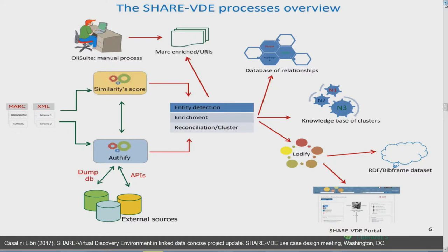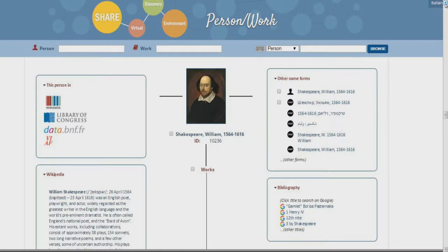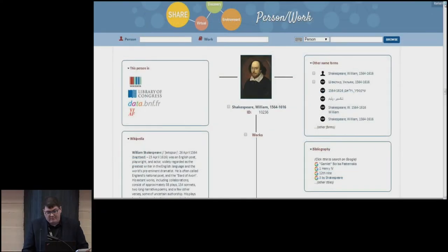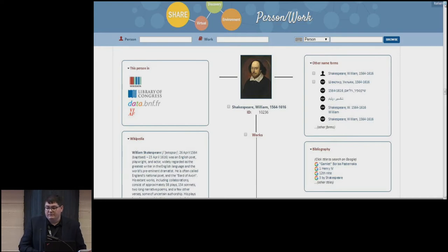That enriched MARC output is then taken through their Lottify process, where the MARC is converted into Bibframe 2.0. This is just a sample of their ShareVDE platform, showing good old William Shakespeare. You'll see there are a few differences to the standard displays you might note — there are other forms along the right, links to Wikidata, LC, BNF, and VIAF, some information from Wikipedia. Down below the screen, the works are broken out, and they've managed to link it directly into our Blacklight Discovery layers, right down to the holdings level.